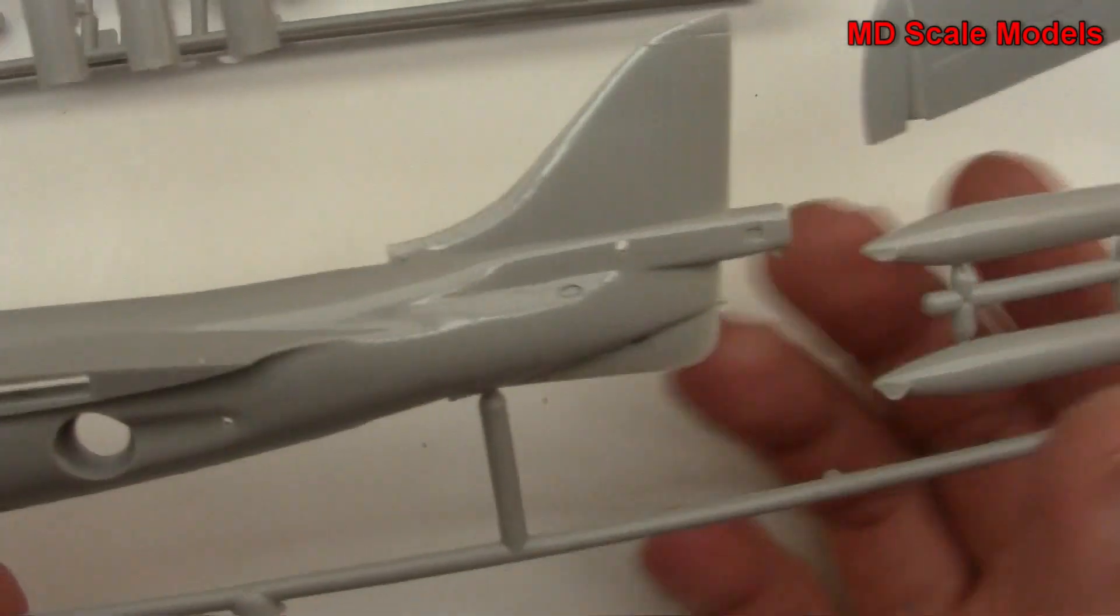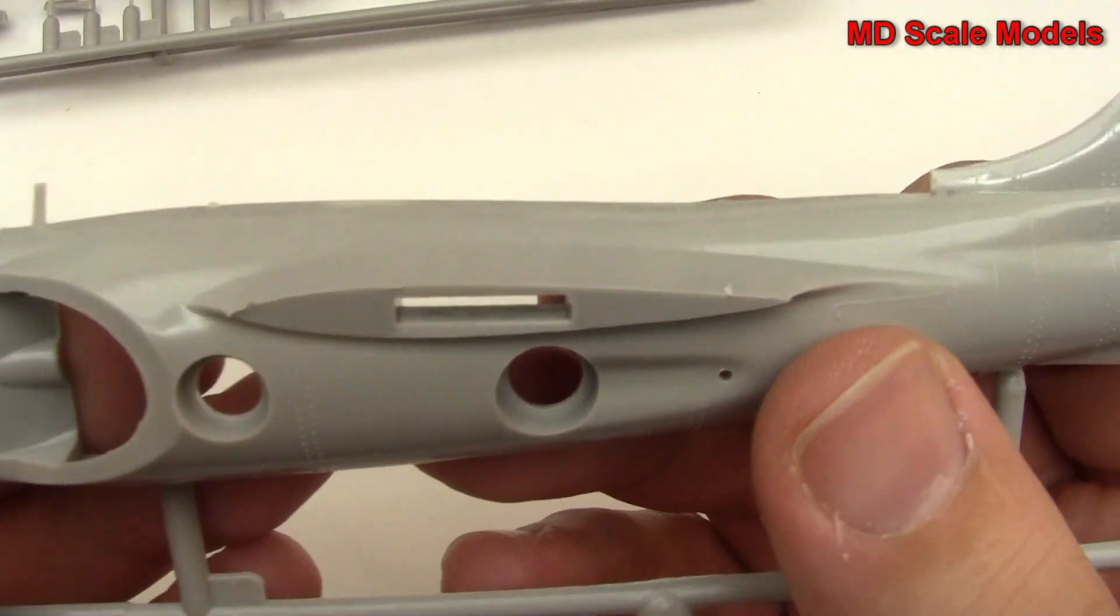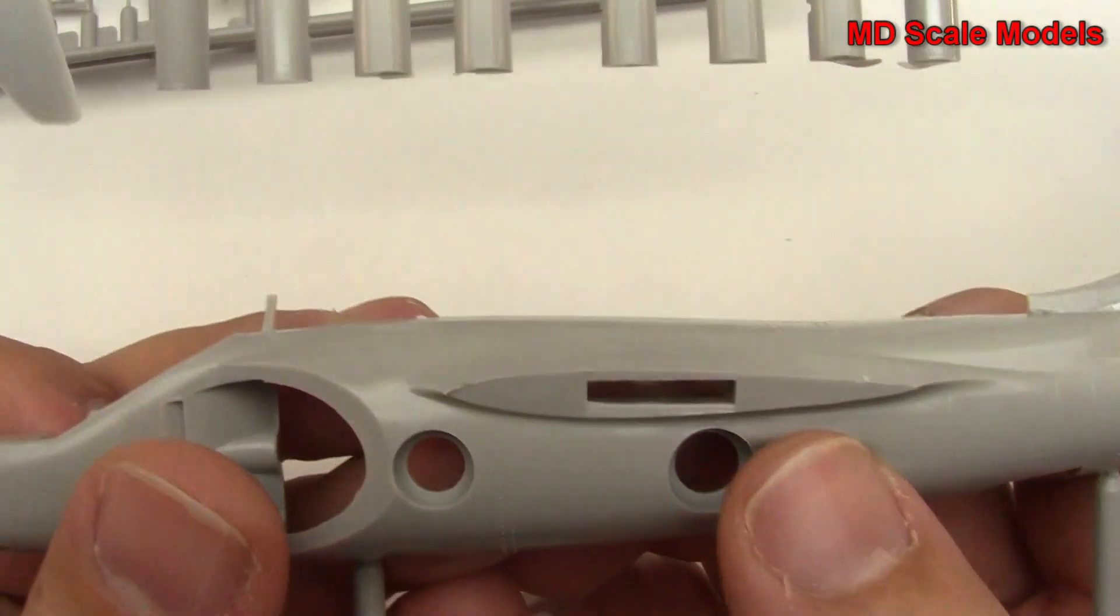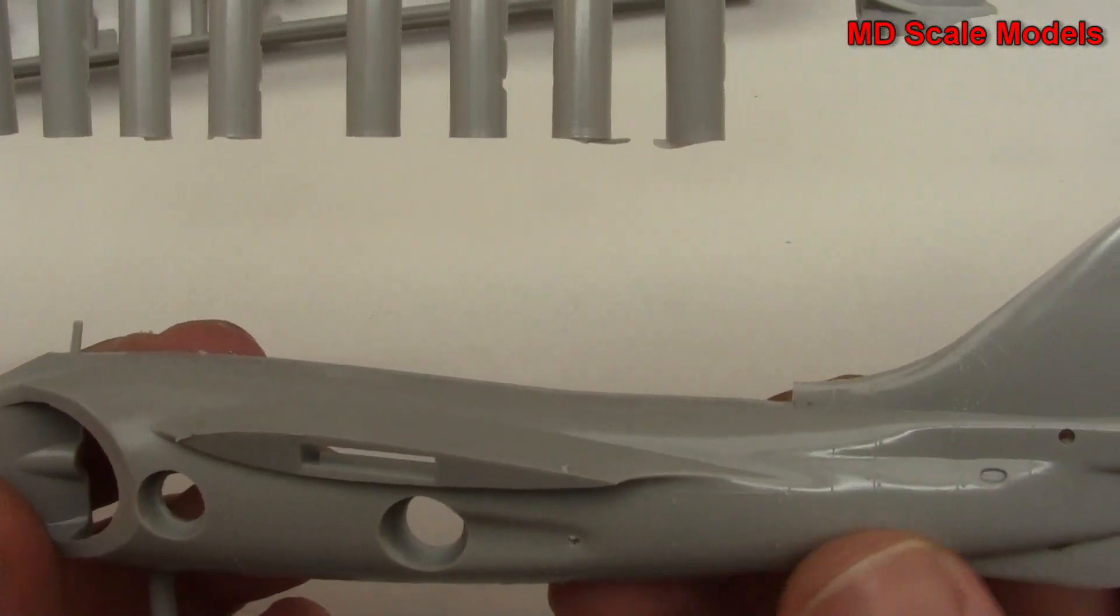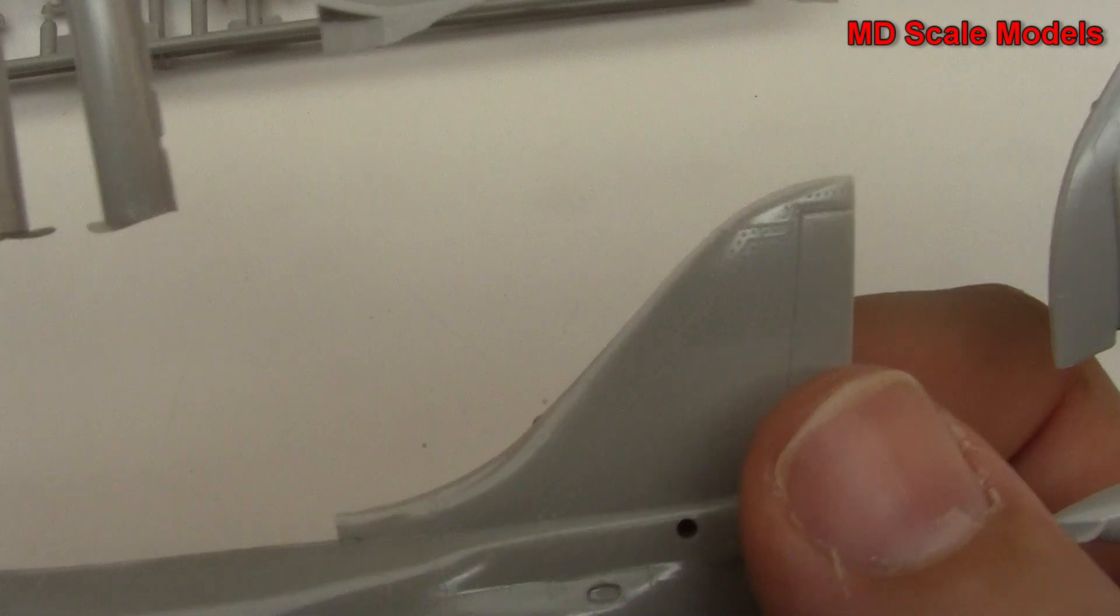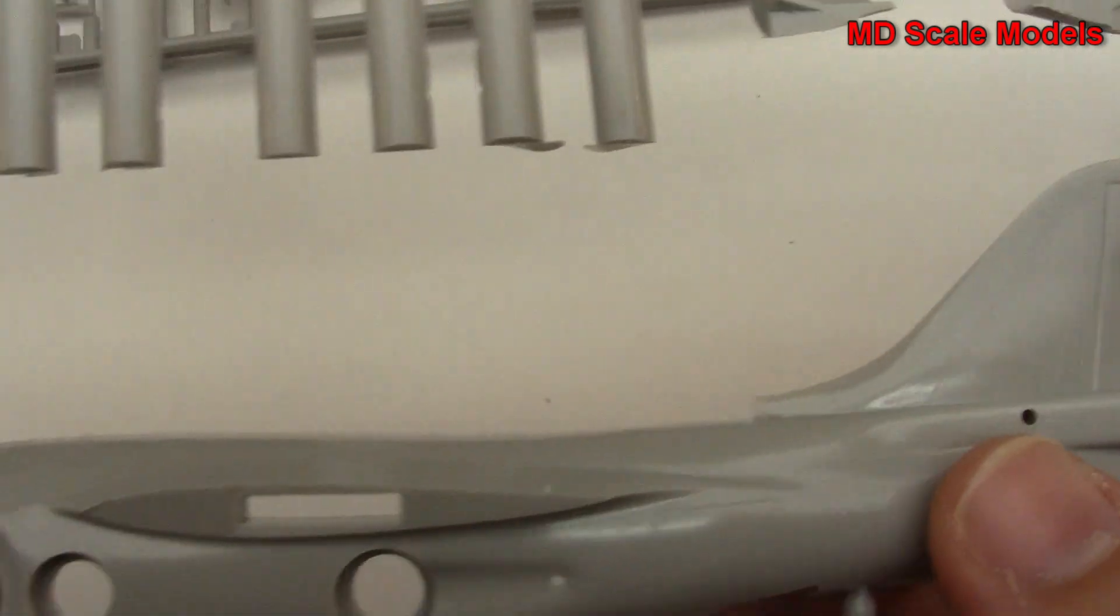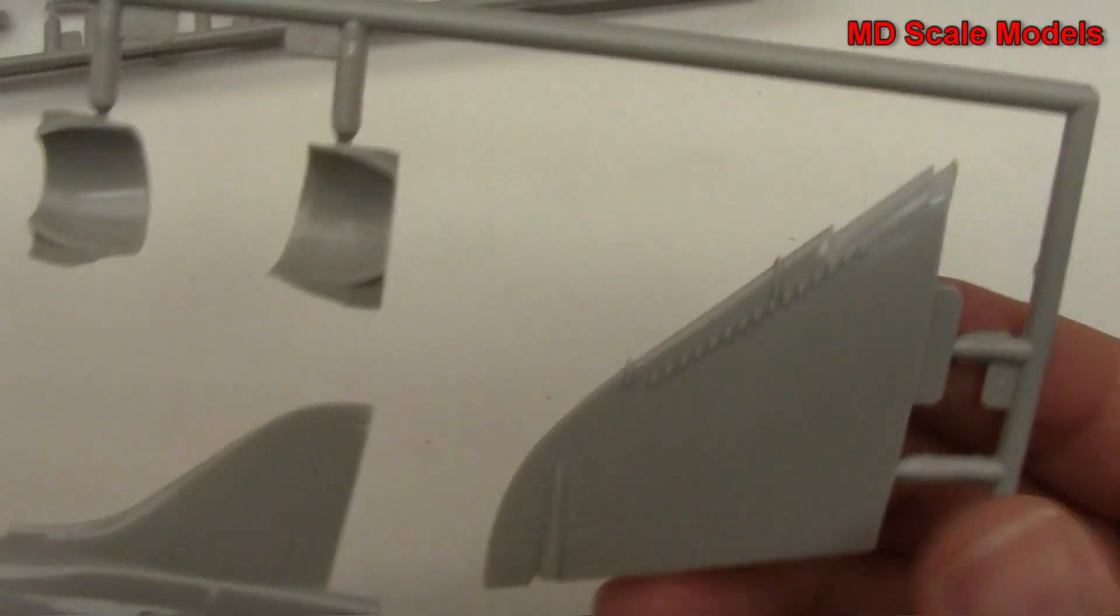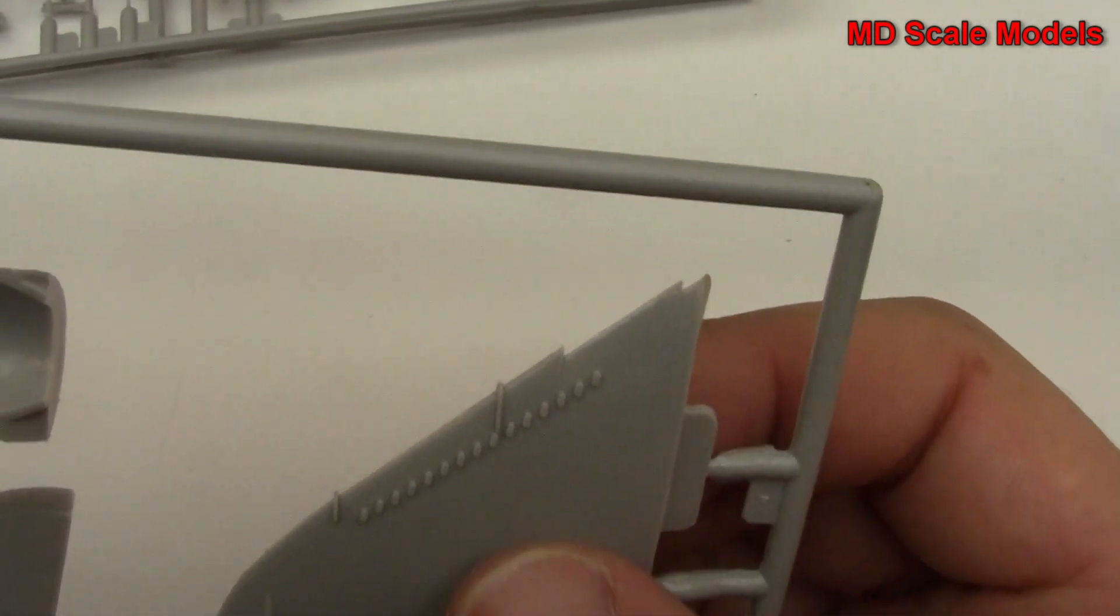So first of all, here we have our left fuselage, our air intakes and our ducts, and we've got some raised rivets and panel lines. It looks like our nose there. Here's our left wing, we've got some nice detail there.